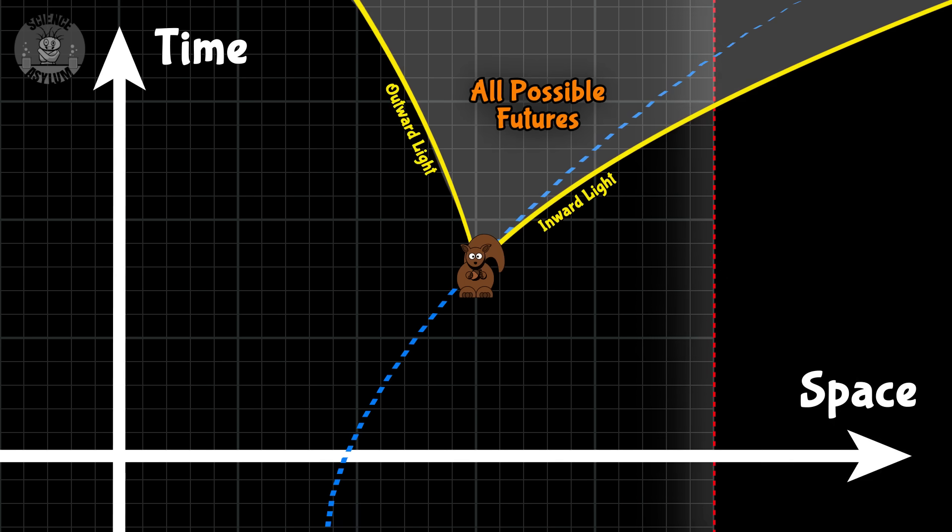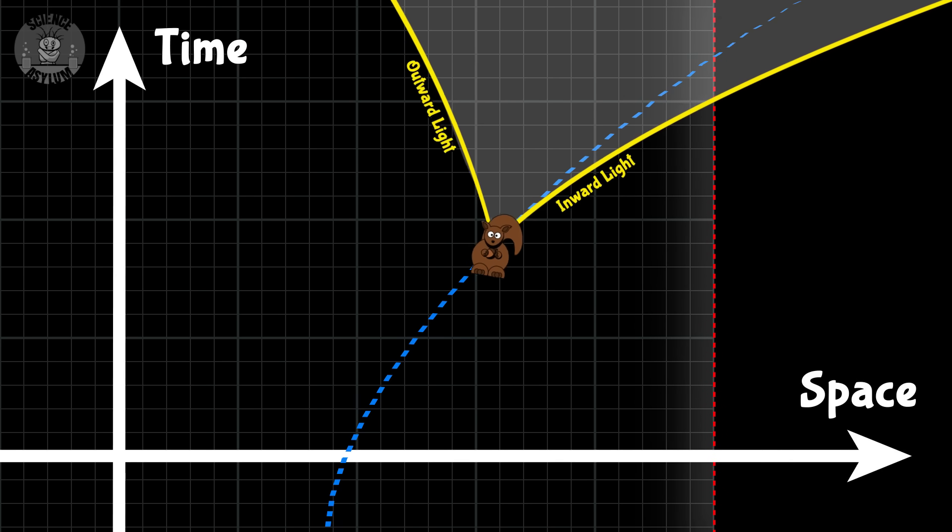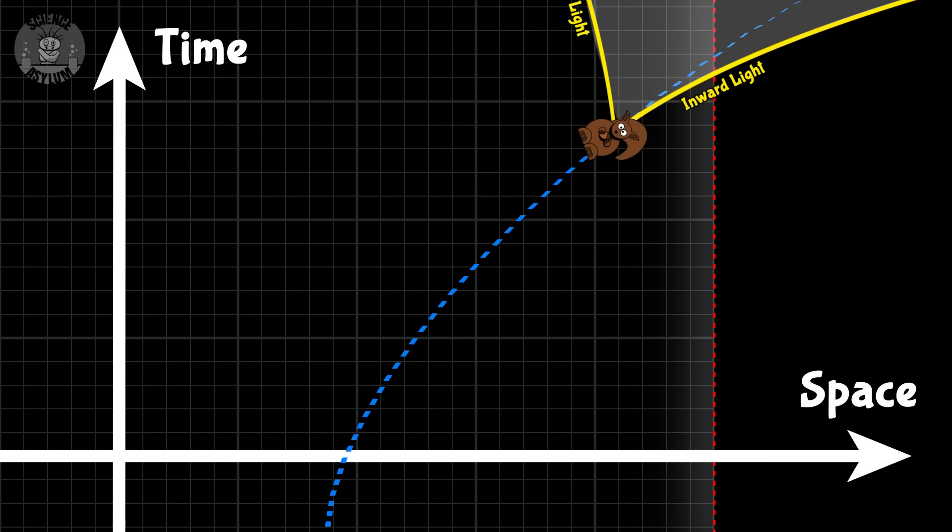But, because of the black hole, the squirrel's actual future is curved. As it falls in, more and more of its future points toward the black hole.